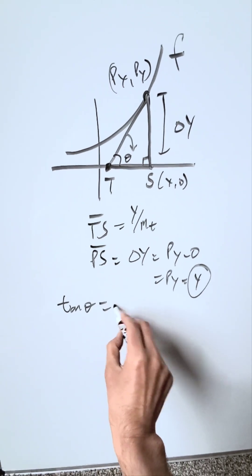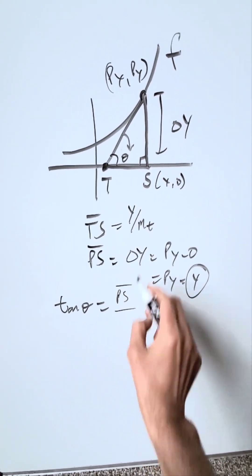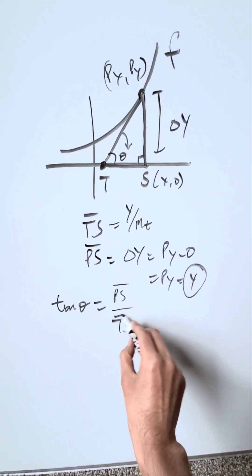You have a specific formula: tan theta is equal to opposite over adjacent. My opposite here is my ps segment divided by my adjacent, which is ts, your subtangent.